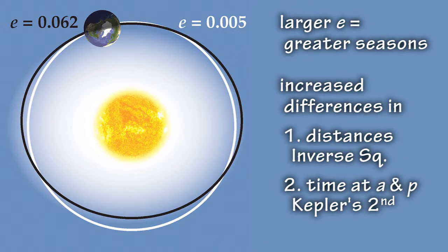As the eccentricity of Earth's orbit increases, the amount of solar energy reaching Earth fluctuates more from summer to winter because of the greater seasonal differences both in the distance between Earth and the Sun and the time spent at the aphelion and perihelion.